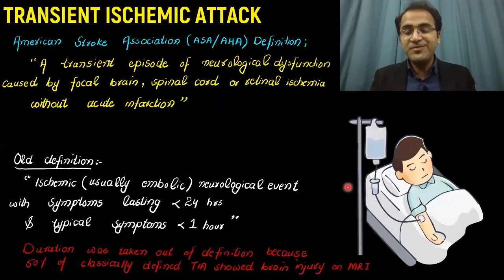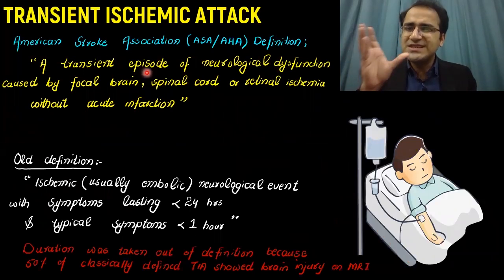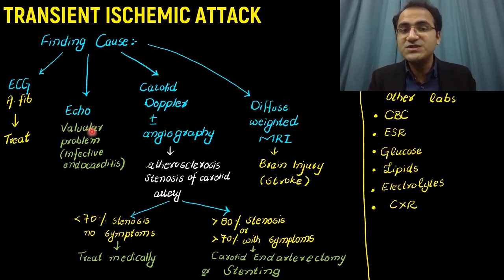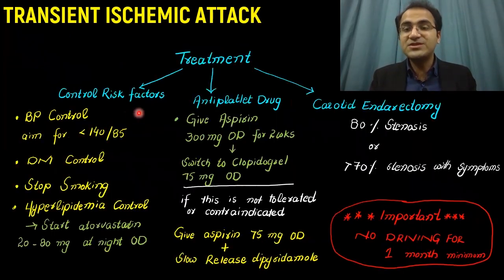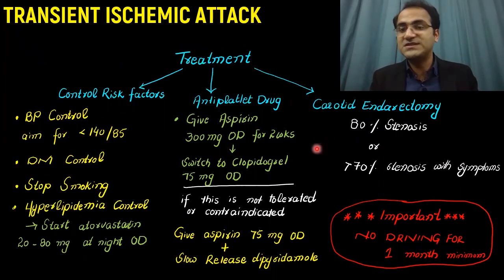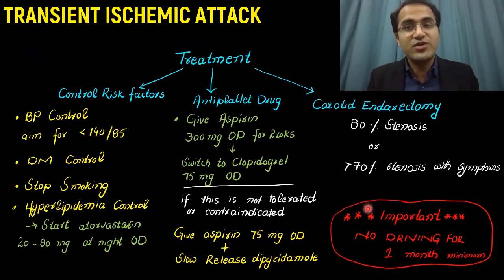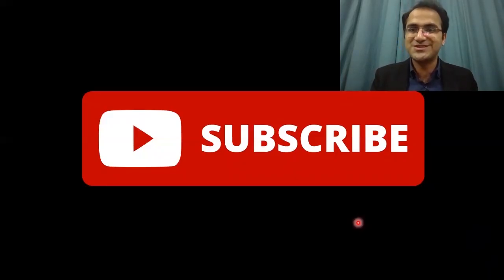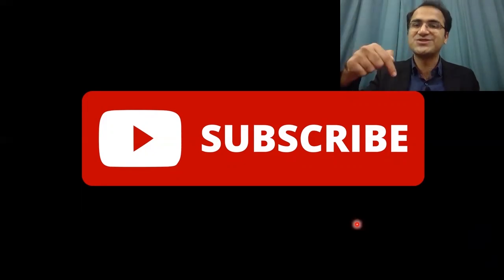In summary, we talked about transient ischemic attack as a transient ischemic episode which has reversed. We discussed presentations including motor, speech, and vision problems. We found the cause using ECG, echocardiography, carotid doppler, and diffusion-weighted MRI. In treatment, we control risk factors, give antiplatelet drugs like aspirin switching to clopidogrel, and perform carotid endarterectomy if there is 80% stenosis or greater than 70% stenosis with symptoms. The patient must not drive for at least one month. If you liked the video, please click subscribe and check out other videos on emergency medicine and step-by-step stroke treatment.